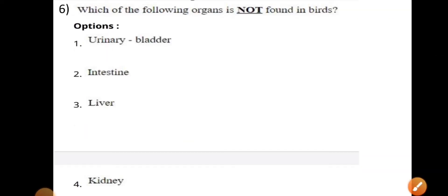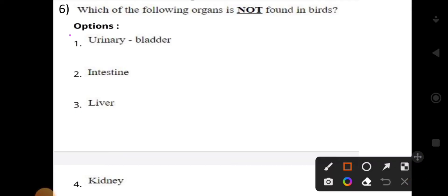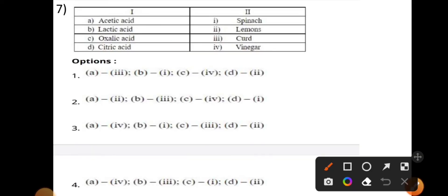Which of the following organs is not found in branch? The correct answer is the urinary bladder. The correct answer is option number 4.